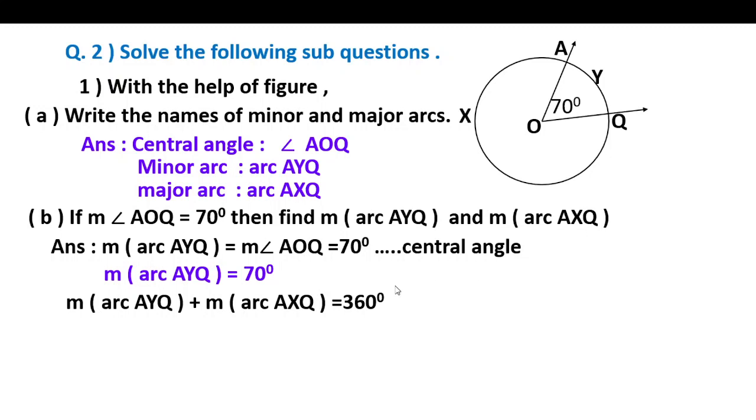For arc AXQ, arc AYQ plus arc AXQ together form the complete circle, so the total measure is 360 degrees. Measure of arc AYQ plus measure of arc AXQ equals 360 degrees.